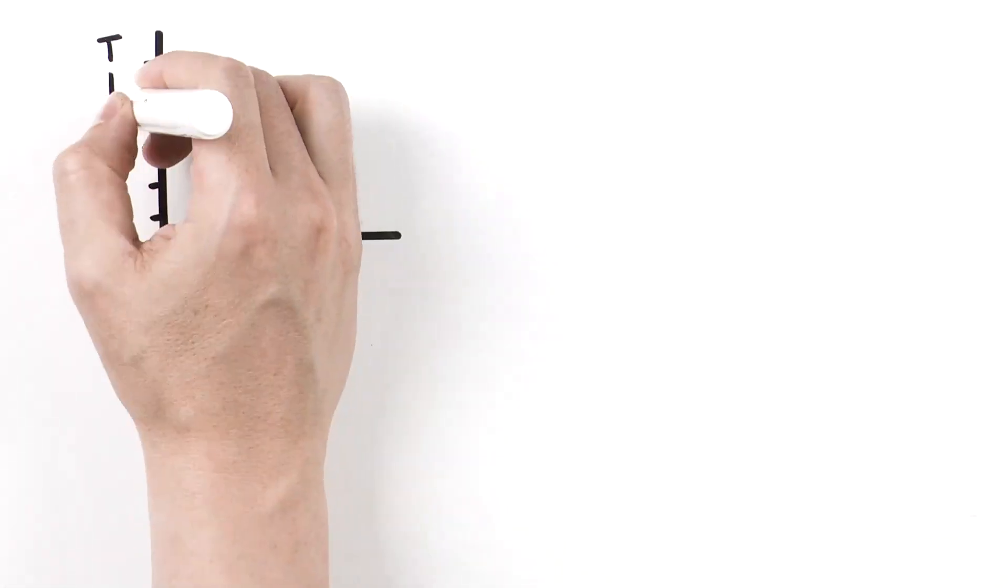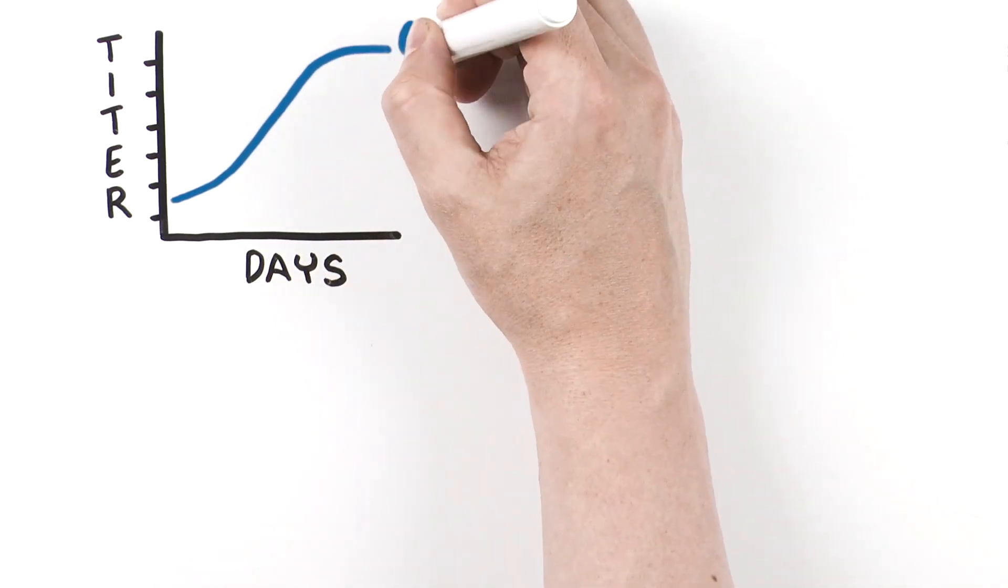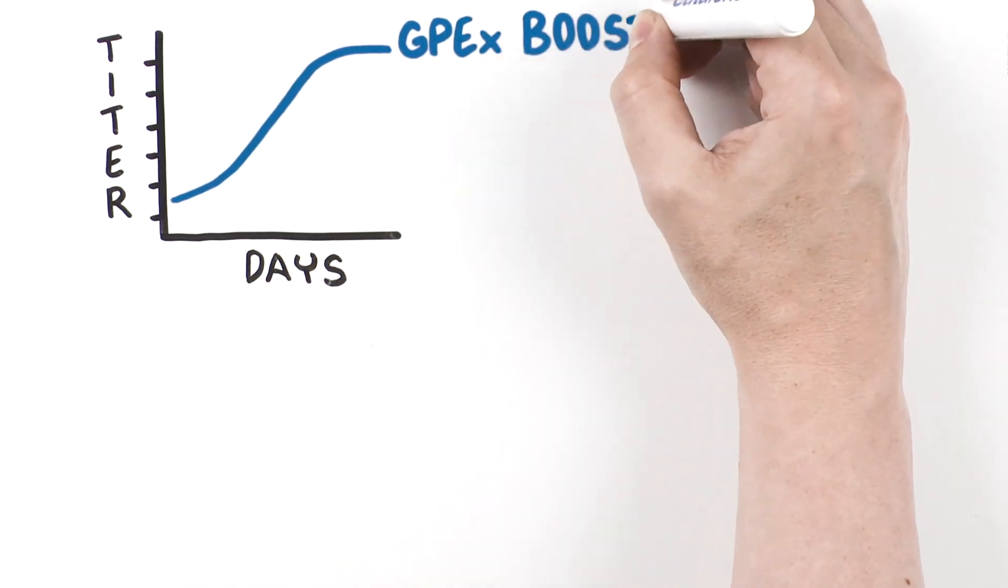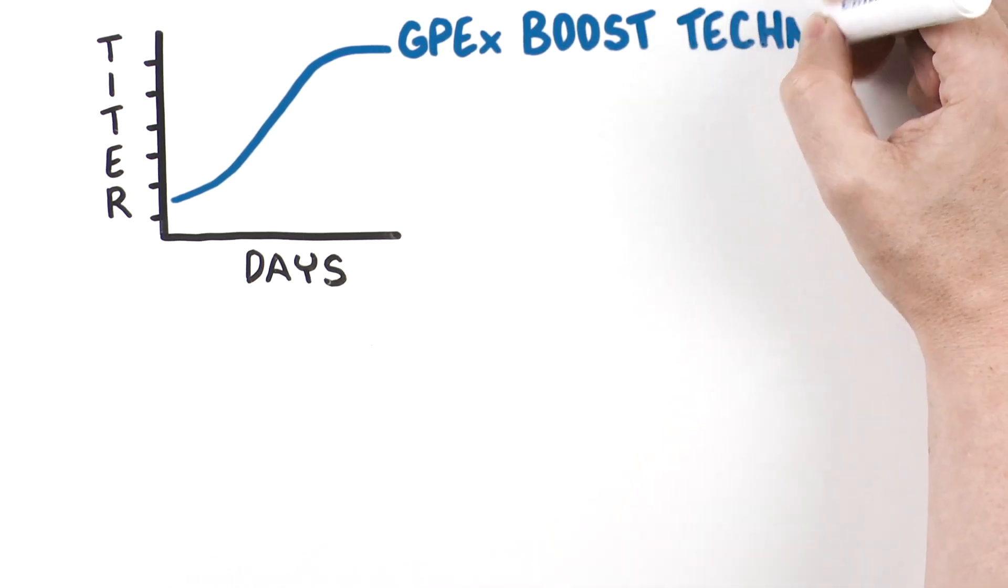GPEX Boost takes cell line development to the next level, utilizing a glutamine synthetase knockout host cell line to achieve even higher titers than traditional GPEX cell lines.